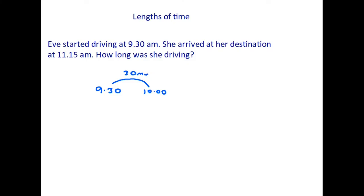From 10 o'clock we then count how many full hours that Eve's been driving. Now in this case she was driving till 11:15, so from 10 o'clock to 11 o'clock that's only one hour. So our next section is to 11 o'clock, that is one hour. From there, 11 o'clock, she then drives till 11:15, so that's another 15 minutes.